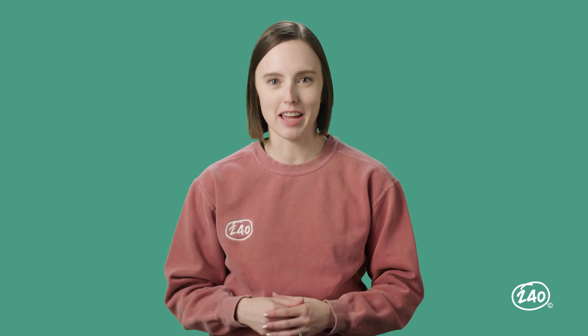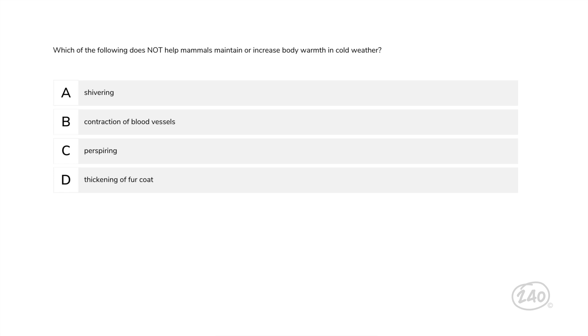Wow, we're already halfway there. Let's keep up our momentum with domain four, diversity of life. Which of the following does not help mammals maintain or increase body warmth in cold weather? This is a tricky one. Do you have your answer ready? The correct answer is C. As perspiration, or sweat, evaporates off the skin, the skin is cooled. Perspiring helps the body reduce body heat, not maintain or increase it.